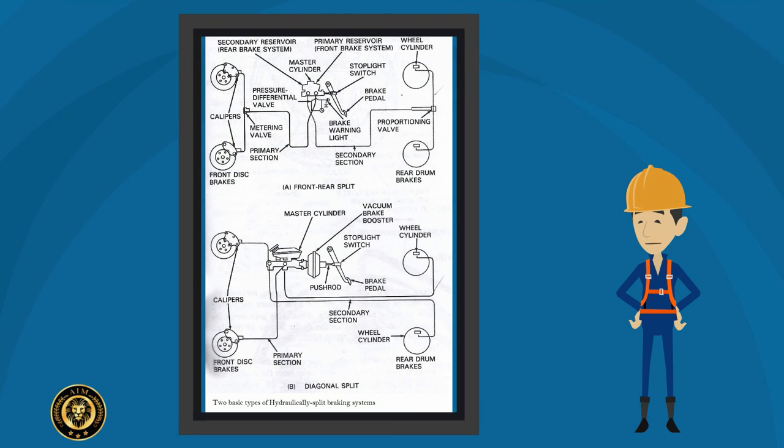In earlier braking systems, there was only one piston in the master cylinder and one hydraulic system. A leak or failure anywhere in the hydraulic system usually meant that there were no brakes.